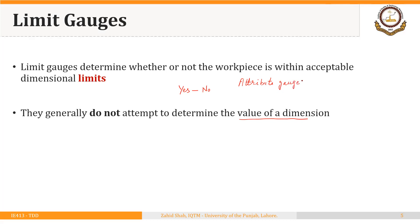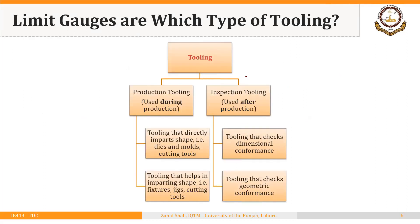Attribute gauges do not determine the value of a dimension. These limit gauges are an example of inspection tooling that checks dimensional conformance. In the next lecture we will discuss inspection tooling that checks geometric conformance. In this lecture we are focusing on limit gauges.